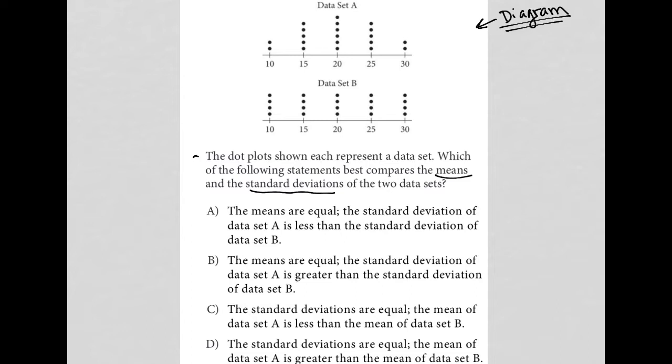So first of all, how do you find the mean? The mean of a data set is the sum of all the values divided by the number of values that you have. So if I look at data set A, I see that this column should represent 20. Because I have two things that have a value of 10.